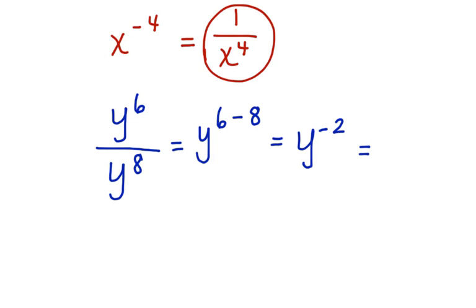So I have y to the 6th minus 8 equals y to the negative 2. I can't leave it with a negative exponent, so I'm going to put 1 over y squared. This is my final answer.